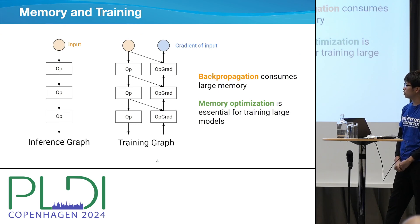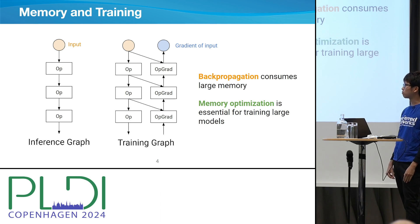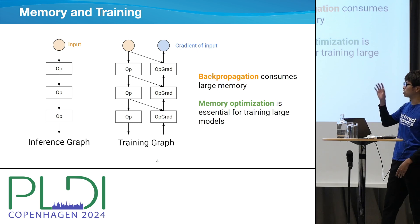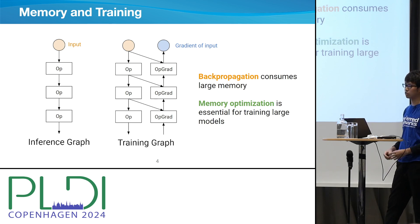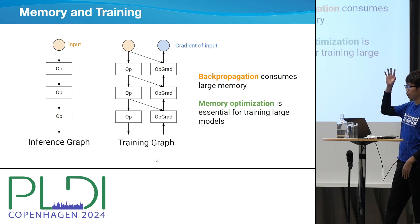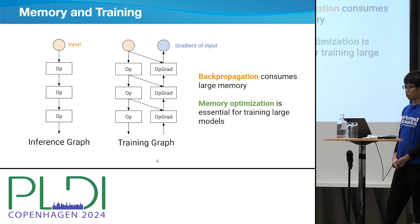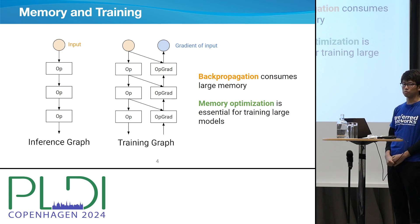When doing inference for neural networks, memory is not a big problem in terms of consumption, because in the inference graph, the computation graph only consists of the forward path, and intermediate values between layers can be freed once the layer is completed. However, in training, the intermediate values of the forward path are still needed for back propagation. So when computing the forward path, we need to store all intermediate results, and we peak at the beginning of back propagation. Memory optimization is very important here for training large models or training with large batch sizes.